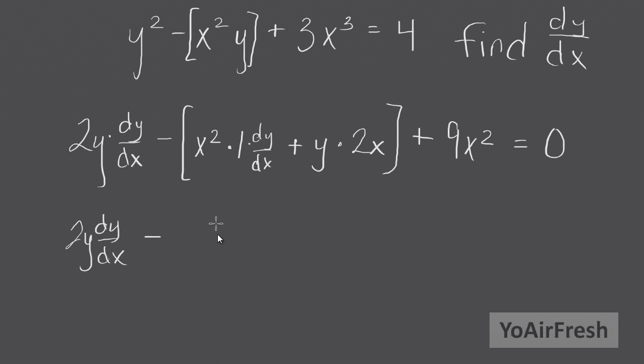So we've got minus, and then in parentheses here, x squared times the 1 dy/dx, so x squared dy/dx, minus right here. Remember, this is going to be a minus. You can do y, 2x, or 2xy, whichever you choose. That's the end of the parentheses there. Plus 9x squared equals 0.